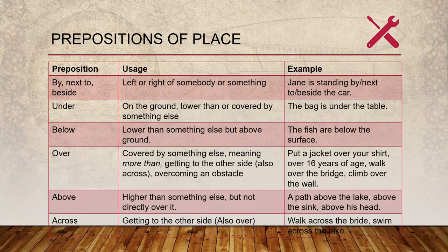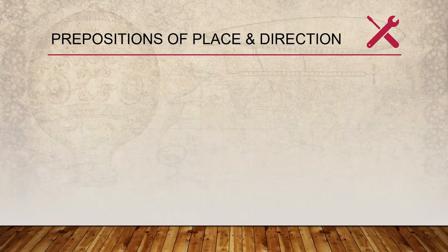Prepositions of place: we have by, next to, beside, under, below, over, above, and across. Each has different uses. For example, 'over' is used when something is covered by something else, or more than something, or getting to the other side — it should be mobile — or higher than something else.